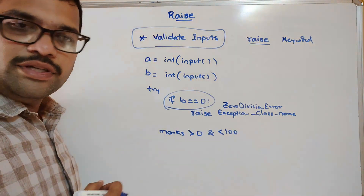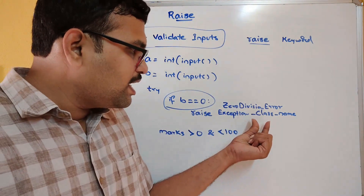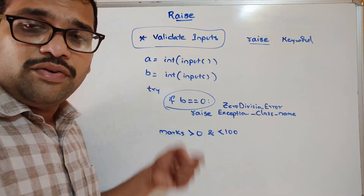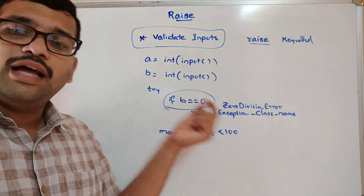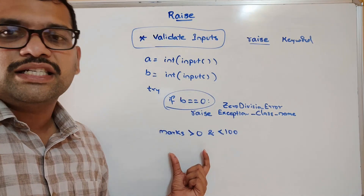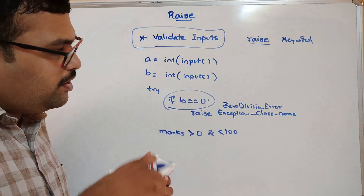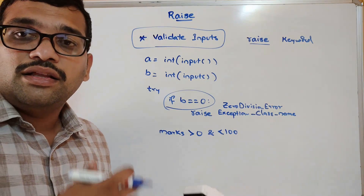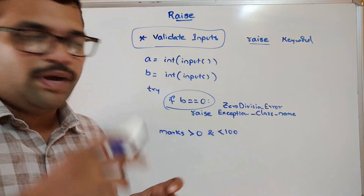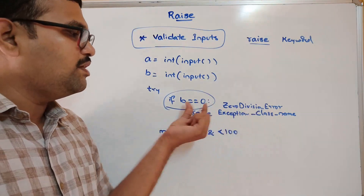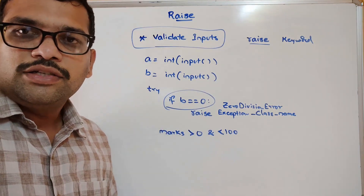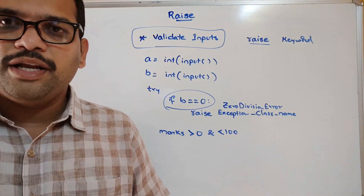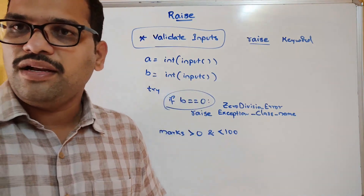Whatever exception is raised will be handled in the except block — the remaining content is the same. Previously the interpreter would raise the exception, but now we can raise the exception ourselves if a given condition is true. Let's see a small example demonstrating the `raise` keyword and move to the interpreter.